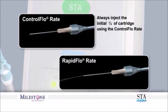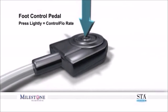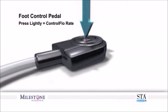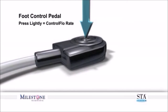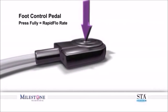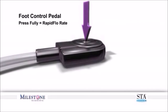Depressing the foot control pedal lightly allows you to enter the controlled flow rate. Fully depressing the foot control allows you to enter the rapid flow rate. There is a corresponding beeping tone to distinguish these two rates that you will hear.